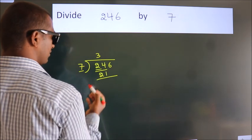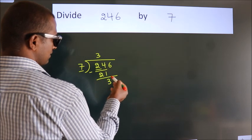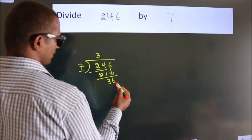Now we should subtract. We get 3. After this, bring down the beside number. So 6 down. So 36.